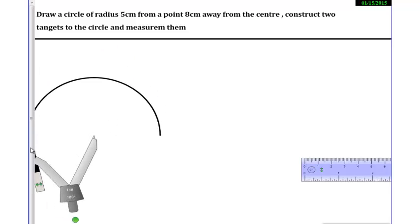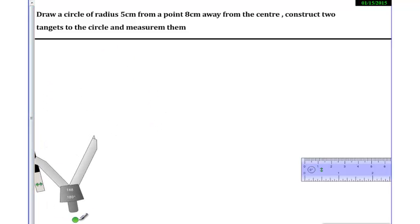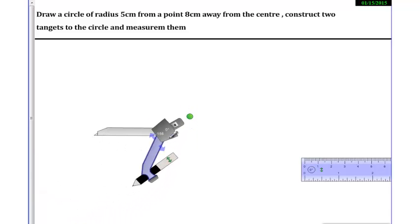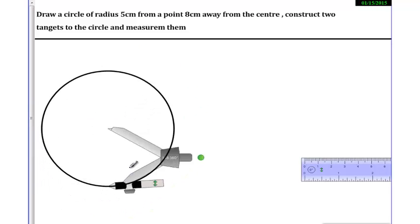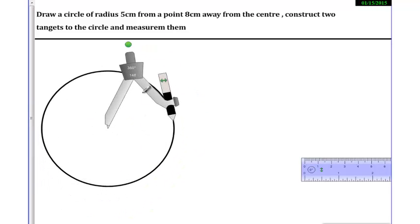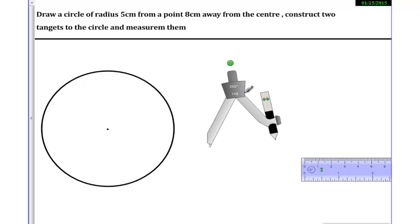So I drew this circle with radius 5cm and I made a dot here so that I can know what is the center of the circle. Let me name this point as O.